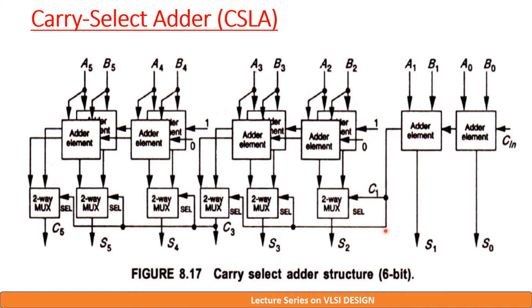The next adder architecture is the carry select adder. In this method, the adder is divided into blocks, and each block comprises 2 adder cells. These adder cells are given with Cin as 1 and Cin as 0. Assuming these Cin values, the corresponding sum and carry outputs are computed, out of which the correct sum bit and carry bit is selected by the MUX, for which the control signal is the carry-in signal of the previous block. In this way, the speed of the next block is not dependent on the previous block. The speed of the adder only depends on this MUX circuit.